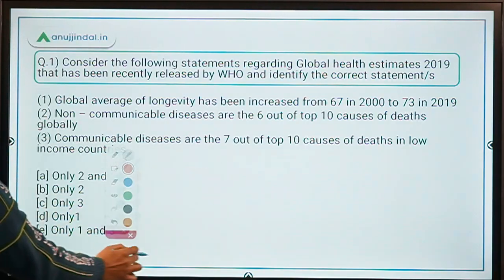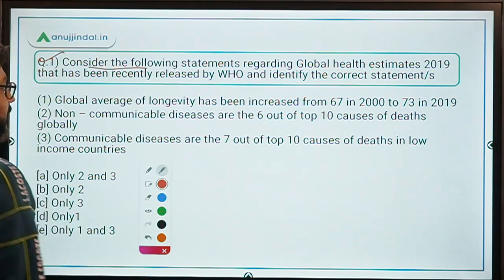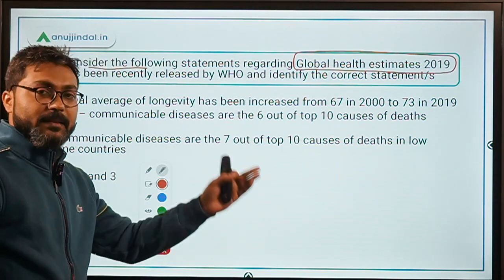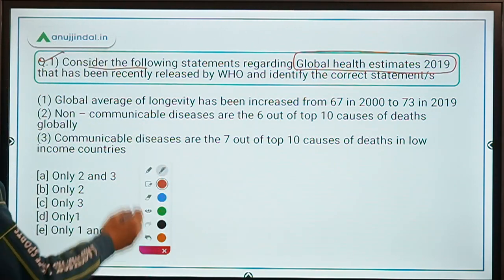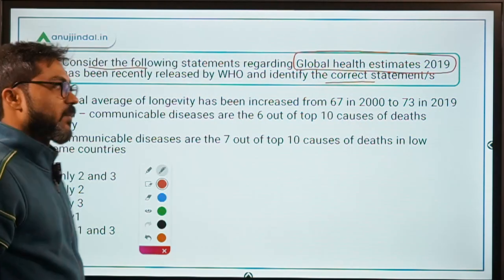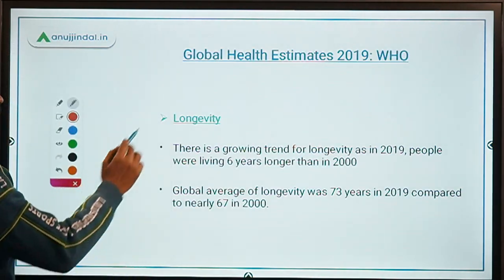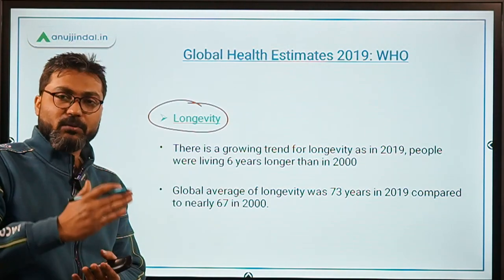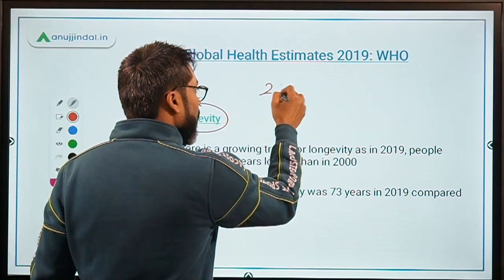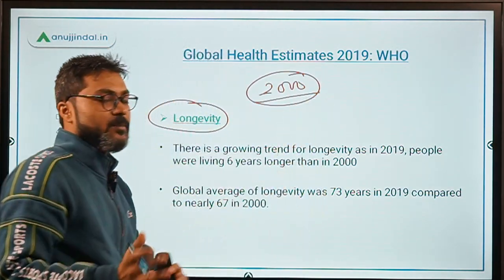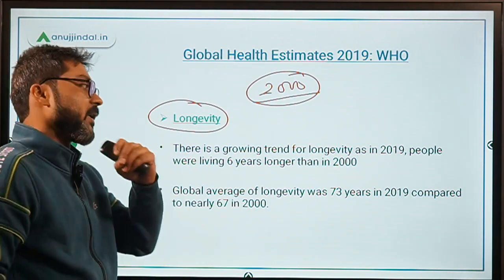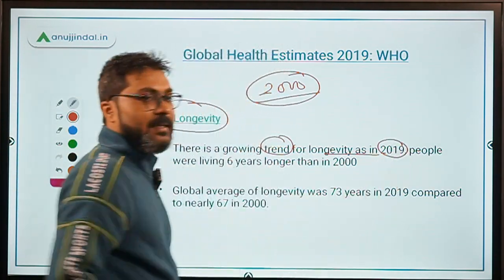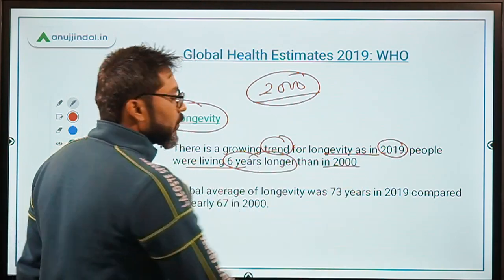Let's begin with the very first question. You have to consider some statements regarding Global Health Estimates 2019. WHO has released this report and you have to identify the correct statements. First, this report talks about longevity of life, comparing 2019 with the year 2000. According to this report, there is a growing trend for longevity — people in 2019 are living 6 years longer than in 2000.